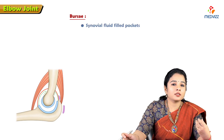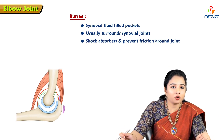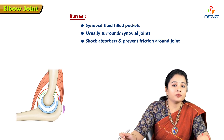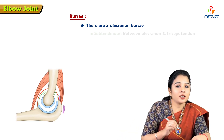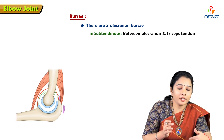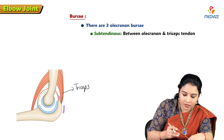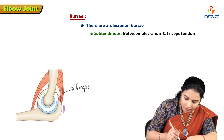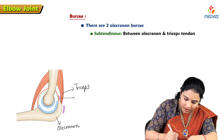Now let us discuss the bursa around the elbow joint. Bursae are synovial fluid-filled pockets that act as shock absorbers and prevent friction around the joint. There are three olecranon bursae on the posterior aspect of the elbow joint. The first is the sub-tendinous bursa, located between the olecranon process and the triceps tendon.